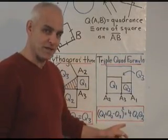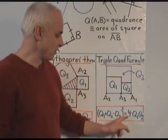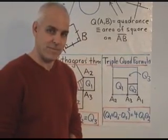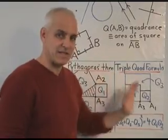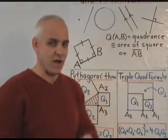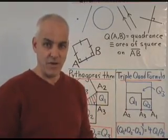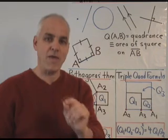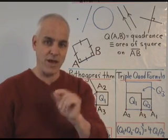The answer is given by the triple quad formula. Q1 plus Q2 minus Q3 all squared equals 4 times Q1 times Q2. Those are the basis of rational trigonometry. And our first objective now is to prove those theorems. I'm going to explain to you exactly why they are true in a way that you can follow and understand.